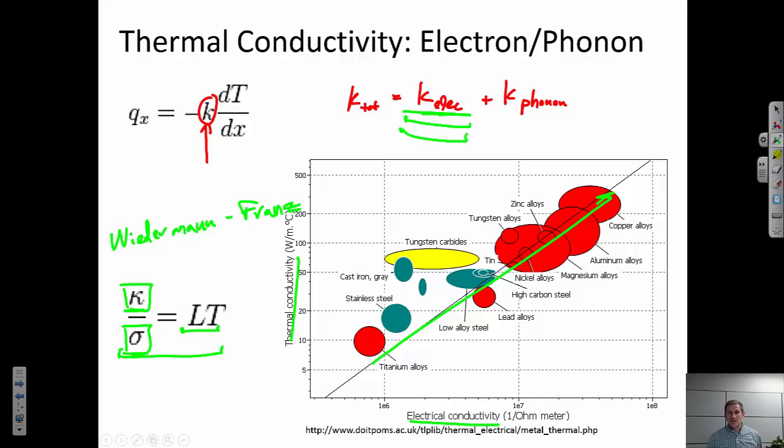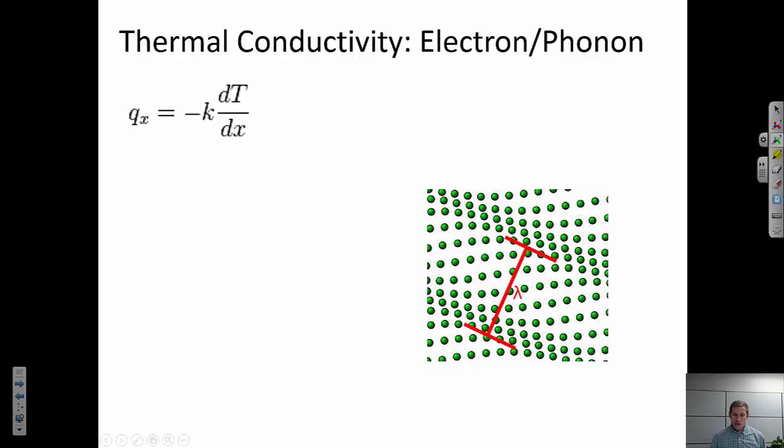So okay, this part is fairly easy to understand. The more electrons, the easier the electrons can move around, the easier it is for thermal conduction to happen as well. But what about this other contribution? And now let me write this again. The total conductivity is the electrical plus the phonon contribution. So what is a phonon?